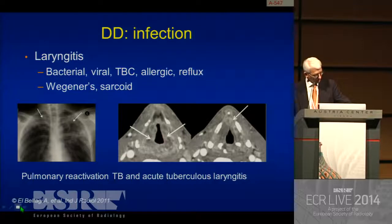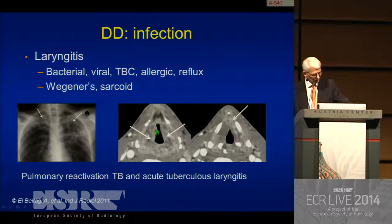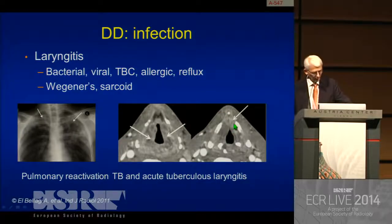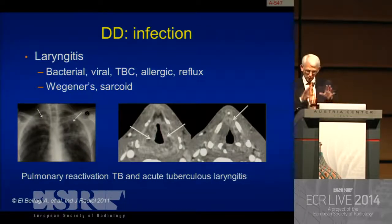This is from our colleague from Kuwait City, Ahmed Elbetagi, who wrote about this patient with a pulmonary reactivation of tuberculosis but also with an acute tuberculous laryngitis. This is at the level of the false vocal cord. Normally we would expect fatty density in the paralaryngeal space, but here we see nodular enhancing lesions, probably submucosally concentrated, and in the true vocal cord area in the anterior commissure, another enhancing nodular lesion. This could be cancer or amyloid or other diseases — of course you need a biopsy, but you have in this particular patient a clinical picture.